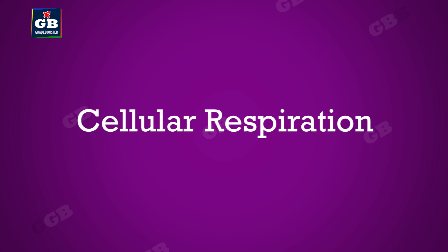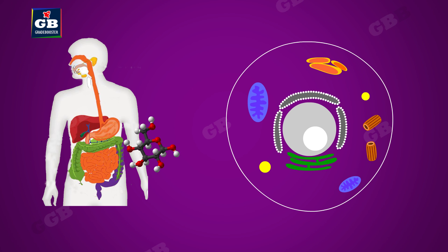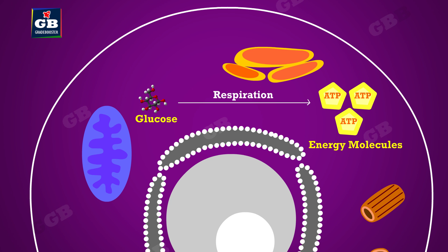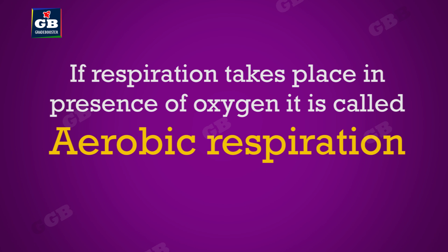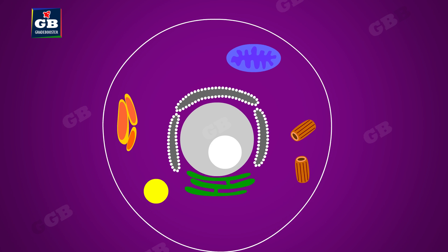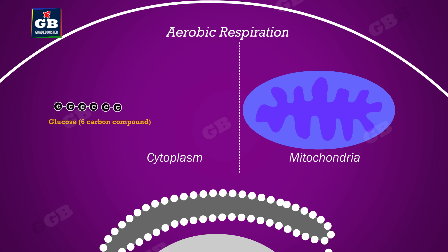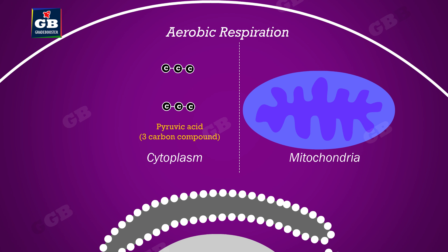Cellular respiration: nutrition provides us with nutrients like glucose, and respiration helps in the release of energy from glucose. Some organisms need oxygen to do this, which is called aerobic respiration. In aerobic respiration, one glucose molecule with six carbons splits into two molecules of pyruvate, each containing three carbons. This happens in the cytoplasm of the cell.